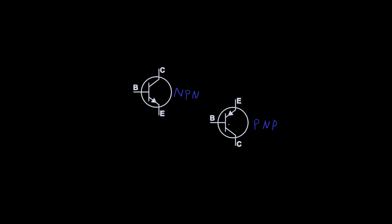Let's look at a simple circuit to help you understand how these work, starting with the PNP. We're going to have a load - anything that's going to draw current. In this case, a motor. We need voltage to run it, so we'll put plus 5 volts here to drive it. The current will run into the motor and come out, then go to the emitter. You have an emitter, a collector, and a base.